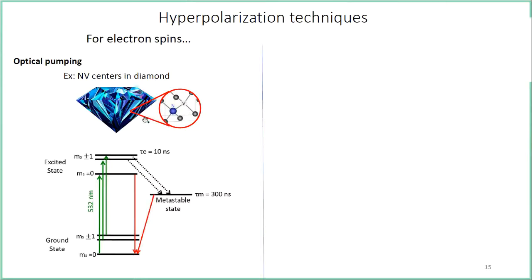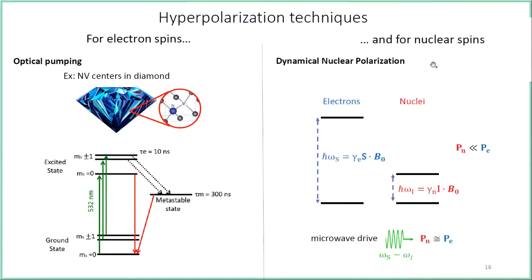For electron spins, the techniques available nowadays are based basically on optical pumping. A typical example are NV centers in diamond. The general idea is to use a spin-independent optical transition to initialize the spin state into its ground state by illuminating the sample with a proper laser. For NV centers, we can reach almost 100% polarization at room temperature for a gigahertz transition — very powerful, but far from being a universal technique because it requires a special electronic structure, so it applies only to a subset of spin ensembles.